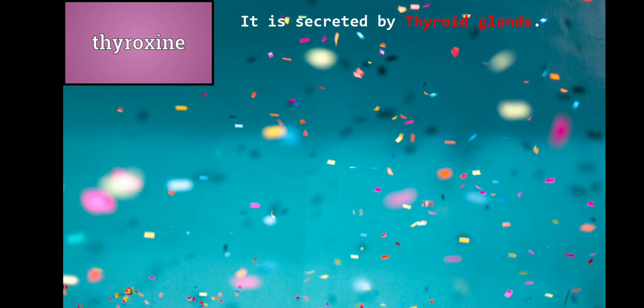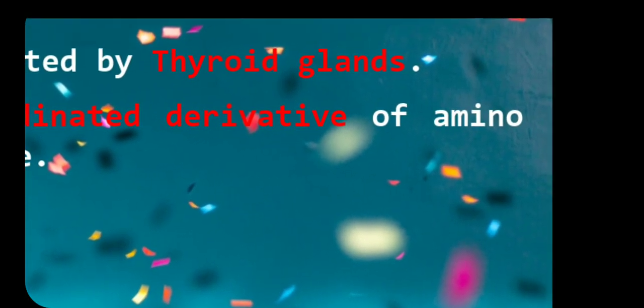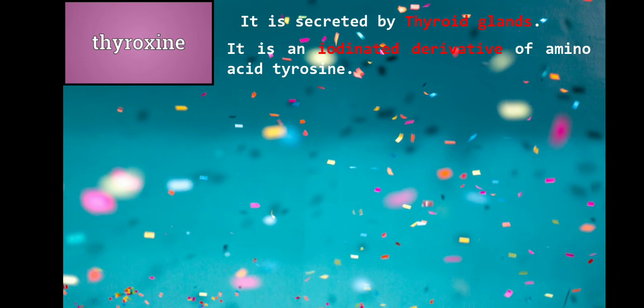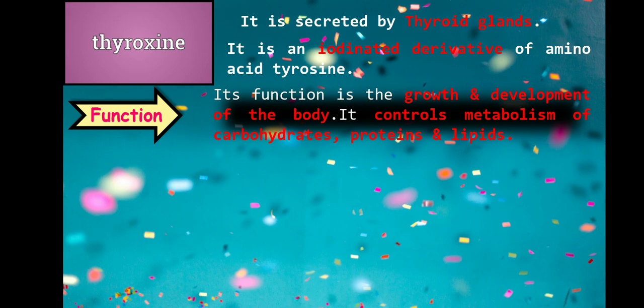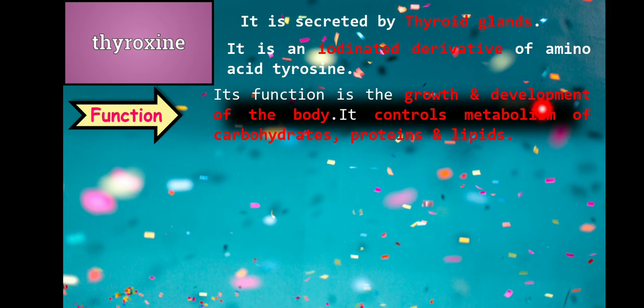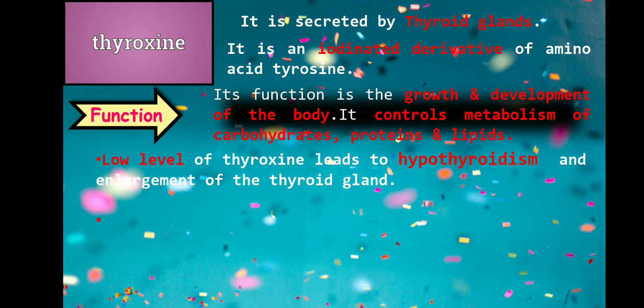The next hormone is thyroxine, secreted by the thyroid gland. It is called an iodinated derivative of the amino acid tyrosine — so in our classification, it is an amino acid derivative hormone. The function of thyroxine is that it is responsible for the growth and development of the body, because it controls the metabolism of carbohydrates, proteins, and lipids.